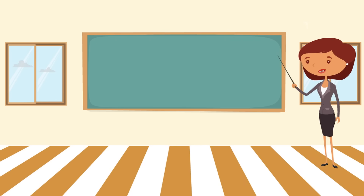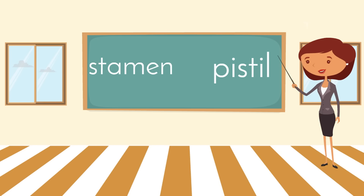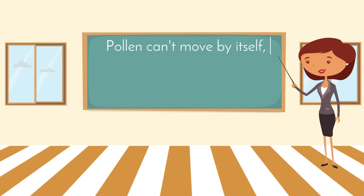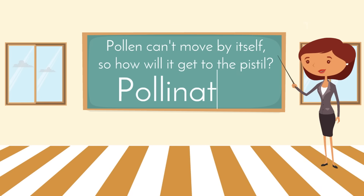There are flowers that have both a stamen and a pistil, but there are some flowers that have only a pistil, and there are other flowers that have only a stamen. Pollen can't move by itself, so how will it get to the pistil?